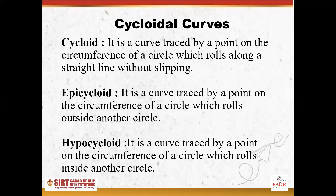The last one is a hypocycloid. A hypocycloid is a curve generated by the fixed point on the circumference of a circle which rolls inside another circle. The curve or path traced by that point is known as a hypocycloid. So depending upon the condition, there are three types of curves generated under the category of cycloidal curves: cycloid, epicycloid, and hypocycloid.